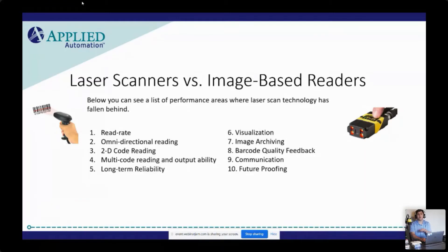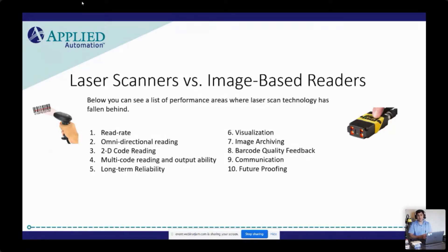There are handheld readers as well as fixed mount readers. The image on the left is a handheld image-based reader. On the right, you have a fixed mount reader, which is mounted to a surface just off a conveyor or wherever you're trying to read a barcode, and products will pass by as it takes images and decodes those barcodes.